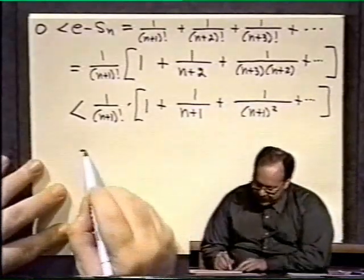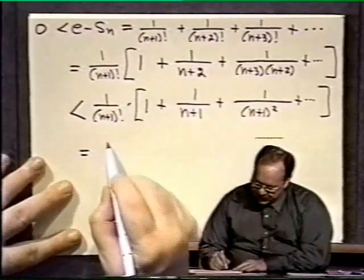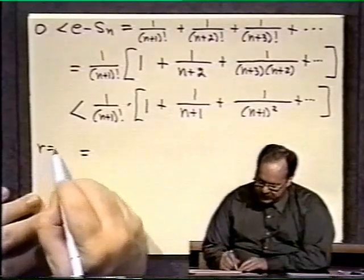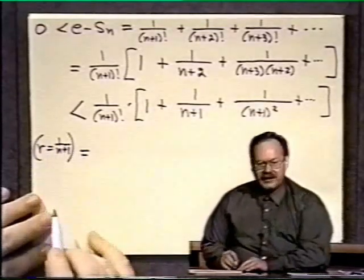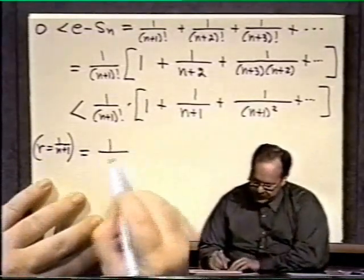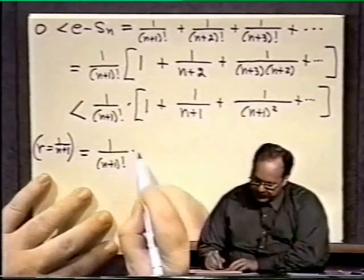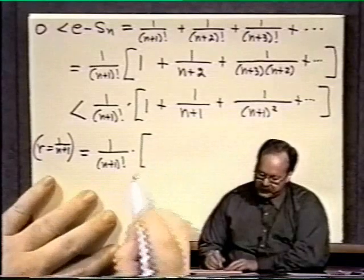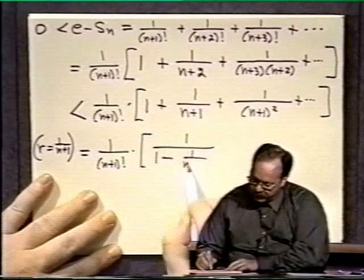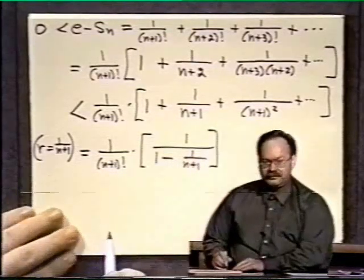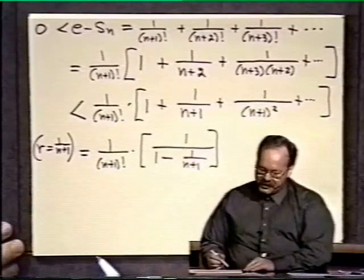But now we recognize that we have a geometric series here. So it's a geometric series and the r for the geometric series is 1 over n plus 1. That is clearly less than 1. So that means we can use the sum formula we learned in a previous segment. That this is 1 over n plus 1 factorial times 1, which is the a here, over 1 minus 1 over n plus 1. So there's no more dots here going out to infinity. We have a nice summation formula.